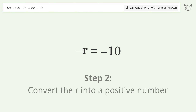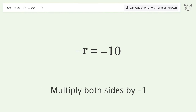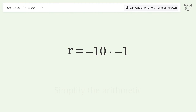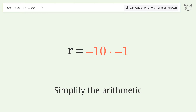Convert the r into a positive number. Multiply both sides by negative 1. Remove the ones. Simplify the arithmetic.